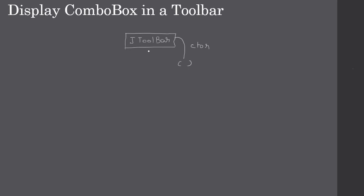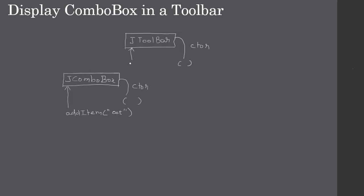Like in the previous example, we will create a JToolbar with the empty constructor. Then we will construct a JComboBox and after that add items to it — some strings. Likewise you can add many items to the JComboBox. After adding all the strings or objects to the combo box, we will call the add method on the JToolbar and pass the JComboBox.